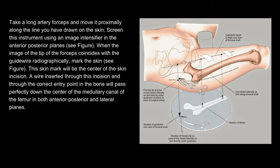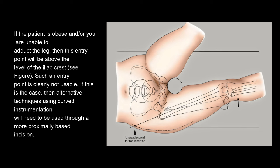This skin mark will be the center of the skin incision. A wire inserted through this incision and through the correct entry point in the bone will pass perfectly down the center of the medullary canal of the femur in both anterior-posterior and lateral planes. If the patient is obese and/or you are unable to adduct the leg, then this entry point will be above the level of the iliac crest. Such an entry point is clearly not usable; alternative techniques using curved instrumentation will need to be used through a more proximally based incision.